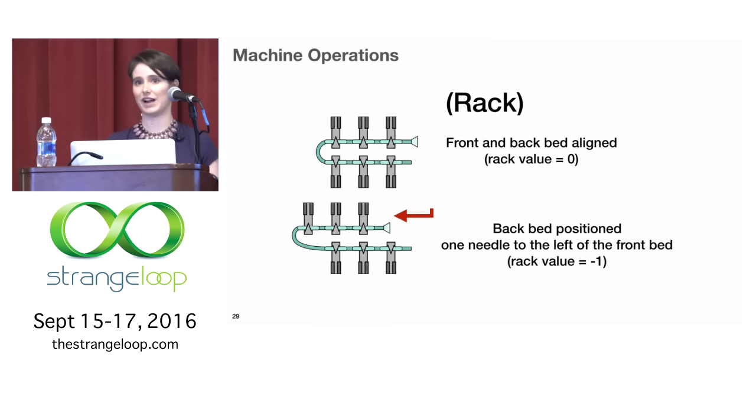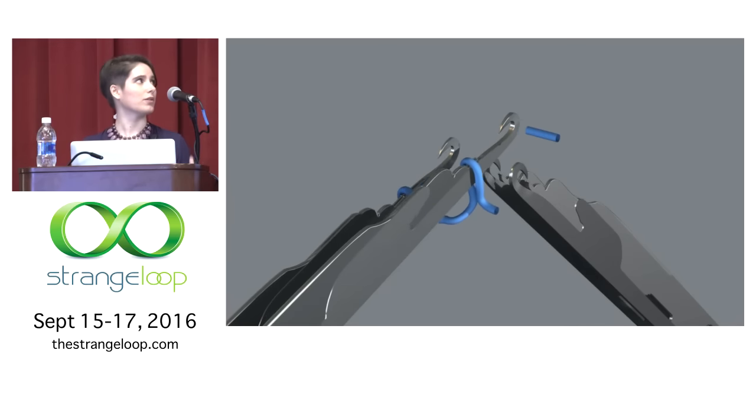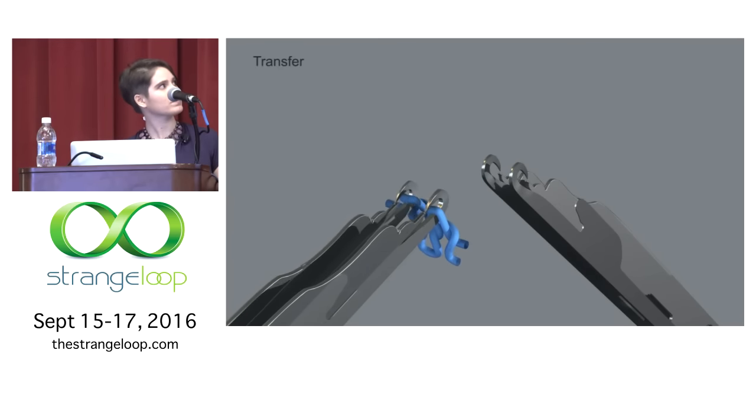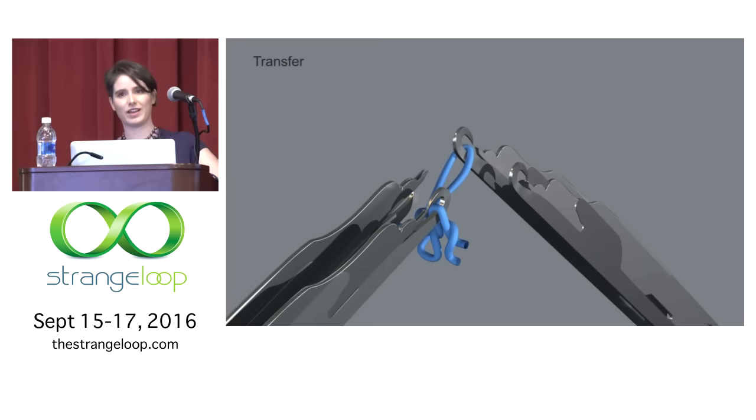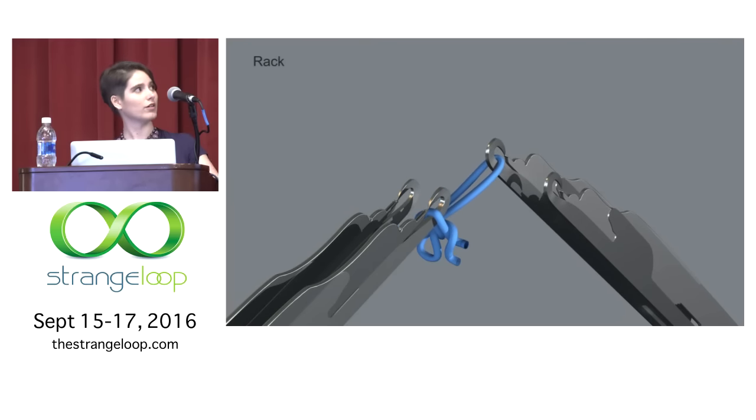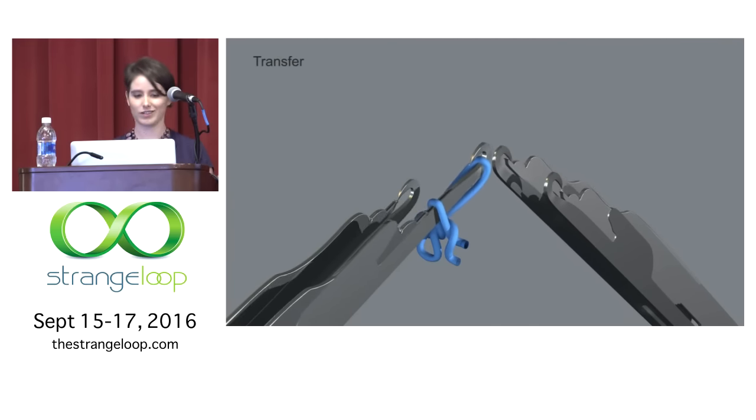So this is rack in the sense of rack and pinion. So it means the entire back bed can slide laterally. So you could think of sort of a default value where needle F0 is lined up with needle left one. Okay. So if you combine the transfer and the rack operations, that's how you're going to move stuff around. So here's a little animation. We're going to see two stitches getting knit. And then one of the loops gets handed off to the other bed. The other bed racks over and hands that loop back again. Okay. That's cool.